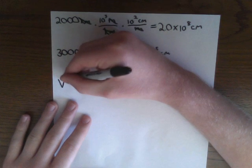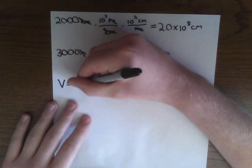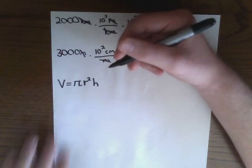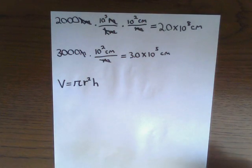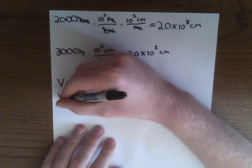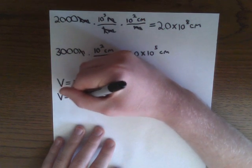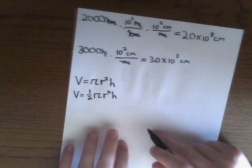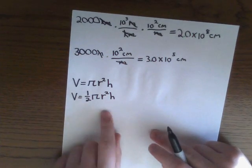We know from geometry class that the volume of a cylinder is V equals pi times the radius squared times the height. Because we have a semicircle here instead of a full circle, we can say that volume equals only half of pi times the radius squared times the height. And that would be our formula for finding the volume of this object.